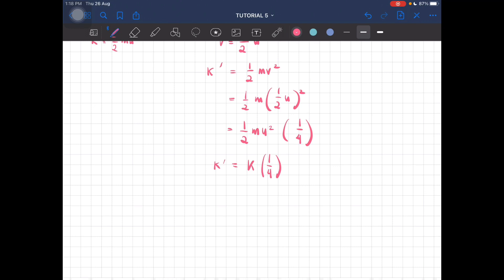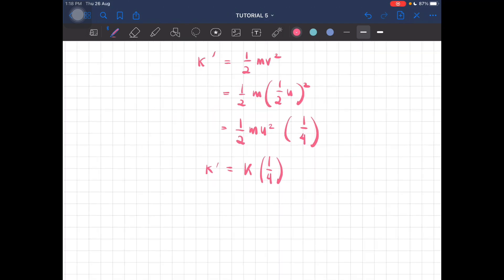So k 1 over 4. So at time, when time is half, the kinetic energy is quarter lah. A quarter of the original kinetic energy.